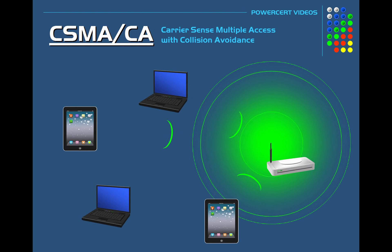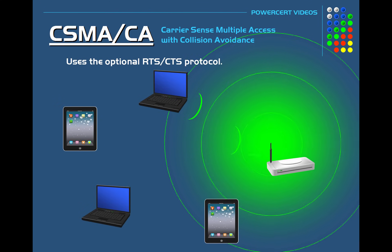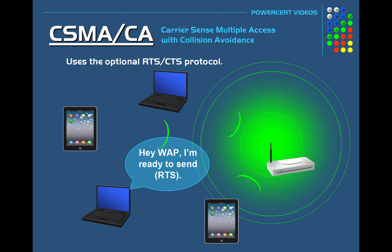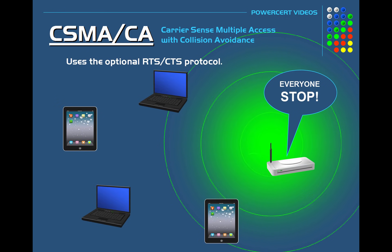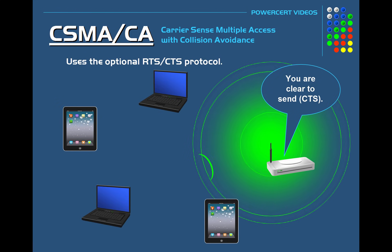Another method that CSMA-CA uses to avoid collisions is the optional RTS-CTS protocol, which stands for Ready to Send, Clear to Send. This optional protocol enables a computer to send out an RTS, or Ready to Send, signal to the wireless access point, requesting an opportunity to send out its data. If the wireless access point grants this request, it will temporarily stop all other communication on the network and respond back to the computer with a CTS, or Clear to Send, signal, telling the computer to go ahead and send its data. In this protocol, the wireless access point is basically the traffic controller on the wireless network.